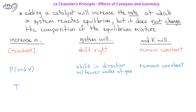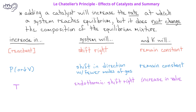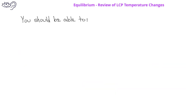If we increase the temperature of a system at equilibrium and the system is endothermic, the reaction will shift to the right and there will be an increase in the value of the equilibrium constant. However, if we increase the temperature and the system is exothermic, the reaction will shift to the left and we'll see a decrease in the value of the equilibrium constant.